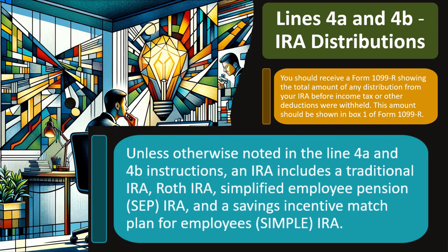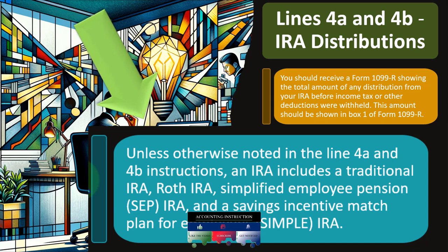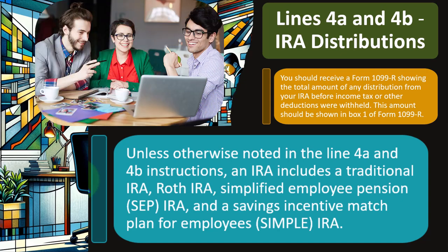Unless otherwise noted in the line 4A and 4B instructions, an IRA includes a traditional IRA, Roth IRA, simplified employee pension SEP IRA, and savings incentive match plan for employees. A normal traditional IRA is where they incentivize you to put money in — you get a tax benefit when you put the money in, and when you take the money out you're subject to tax. That's useful if you're in your working years making the highest income, because you get the deduction when marginal tax rates are highest, then get taxed in retirement when income should be lower.